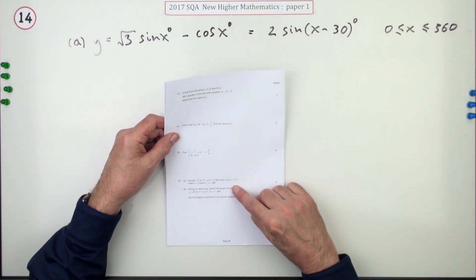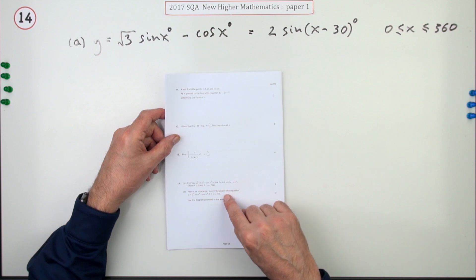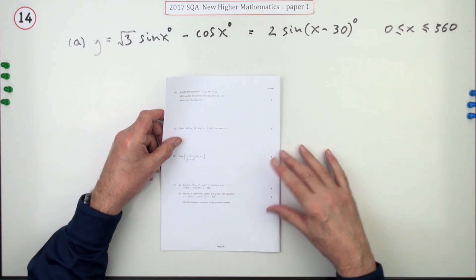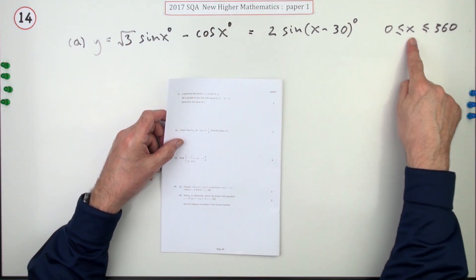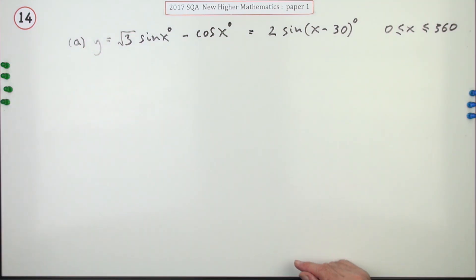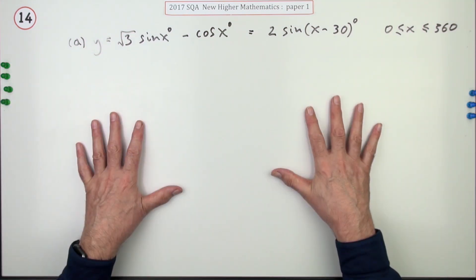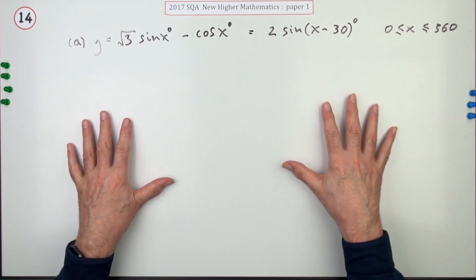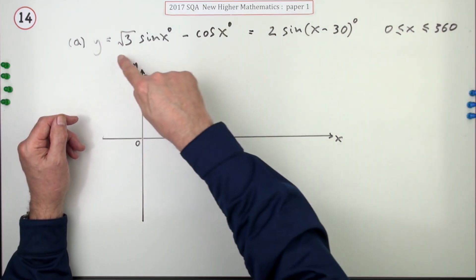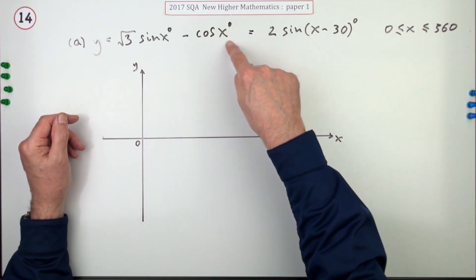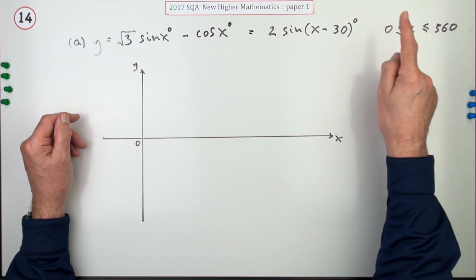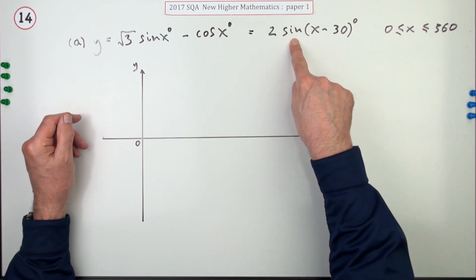In Part B it says 'hence or otherwise sketch the graph with equation y equals this, for x between 0 and 360.' The answer booklet presumably had a pair of axes on it. In order to sketch this, it's obviously easier to sketch the single wave form instead, since it's just a sine graph that's had two changes applied.